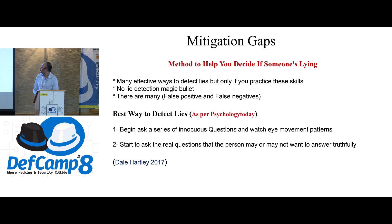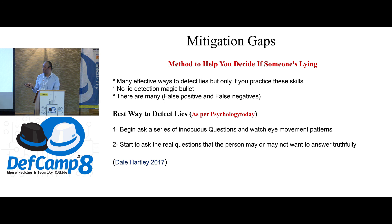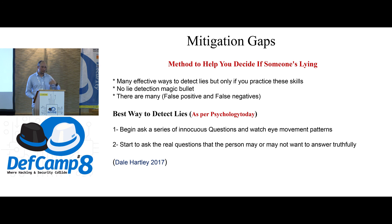Here's a method to help detect if someone is lying. There are many effective ways to detect lies, but only if you practice. No lie detection method is a silver bullet — there are false positives and false negatives. But research by Daily Hardy, 2017, from Psychology Today suggests: ask a series of innocent questions the person won't lie about and map their eye movement pattern. Then ask the question they may lie about and see if the eye movement pattern changes. This training would be useful for security guards and receptionists dealing with strangers every day.